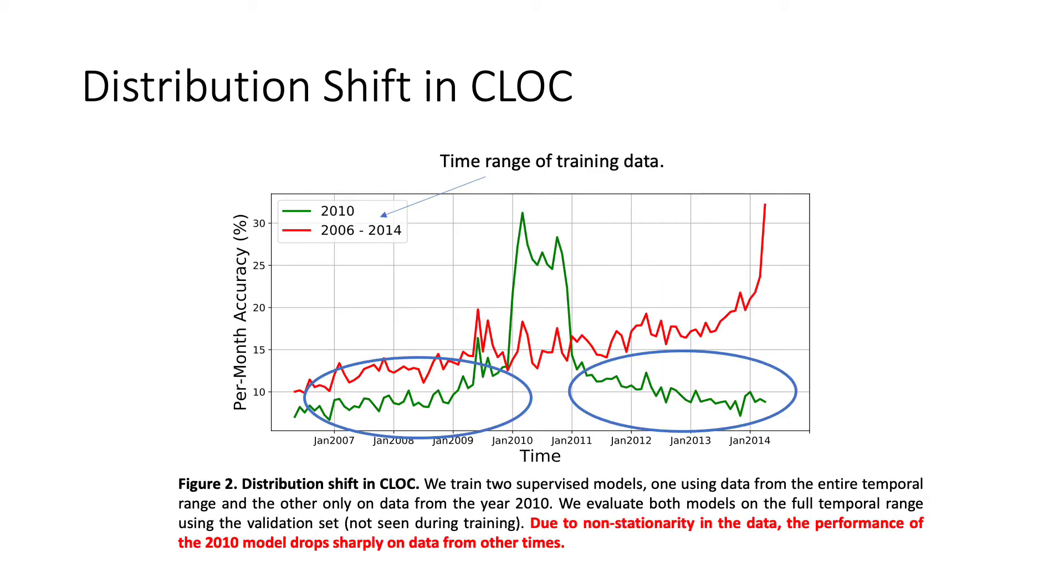We empirically verify the distribution shift of CLOCK by training supervised learning models on data from different time ranges. The model trained only on data from year 2010 had a sharp performance drop on other years.